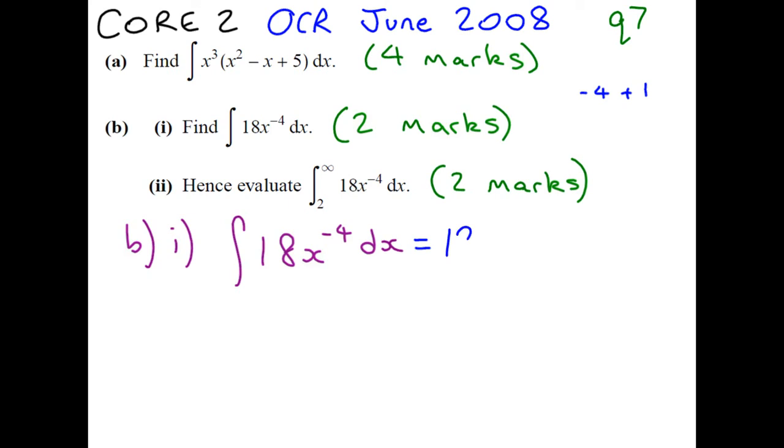So you get 18x to minus 3 divided by minus 3. When we divide by a negative, we get a negative, so we can put it there. And we need a plus c because we're not integrating between limits. Now 18 over 3 gives us 6, so our answer is minus 6x to minus 3 plus c.